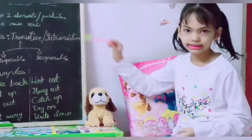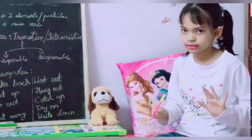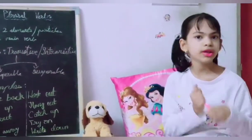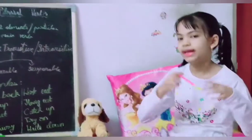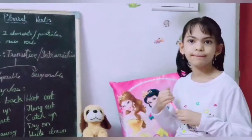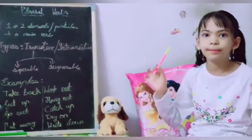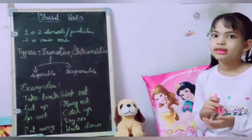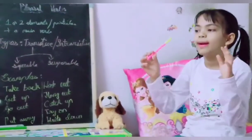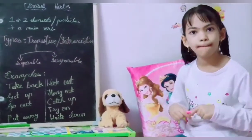In intransitive phrasal verbs we do not need a direct object, just like in 'broke up.' 'Broke up' is the past form of 'break up' and means the end of a relationship or partnership — just like in the sentence 'My partner and I broke up.'